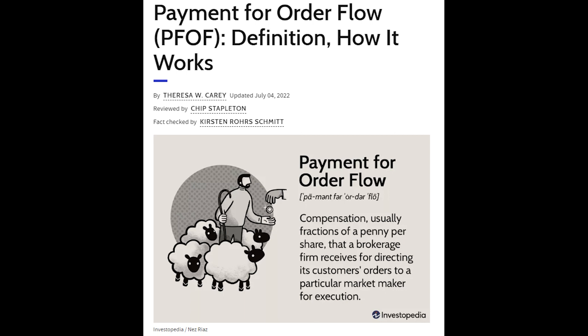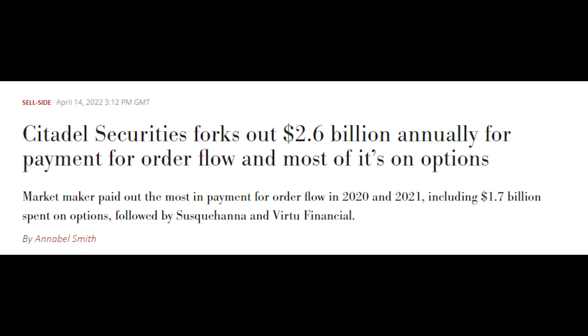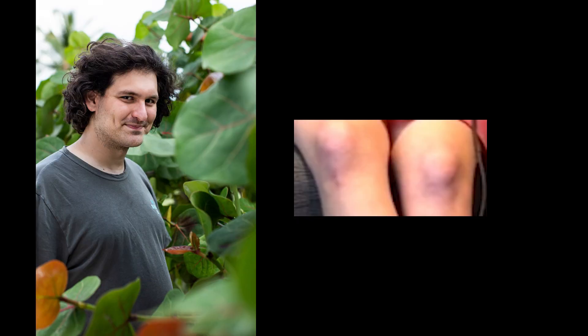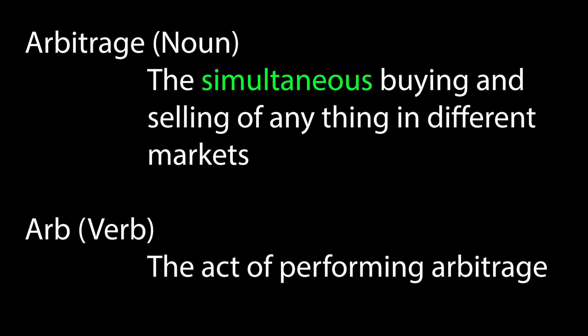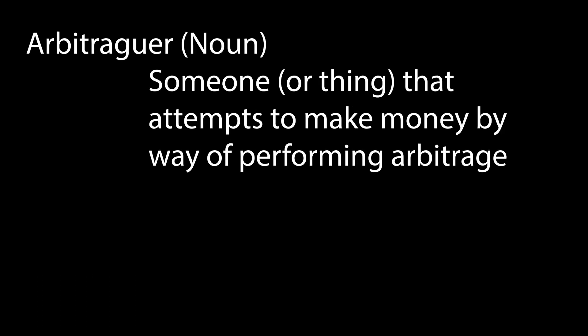And the more you learn about just all the ways that centralized exchanges have an advantage, the more you'll be confused about how places like FTX can still lose all that money. Arbitrage happens in every market, and those people, or bots, who perform arbitrage are called arbitrageurs.